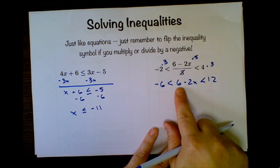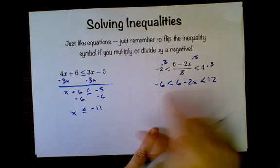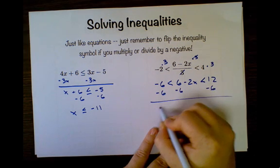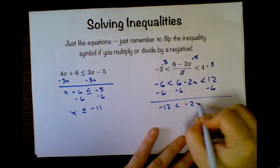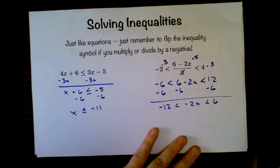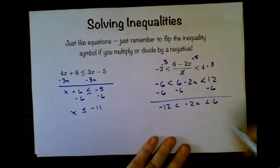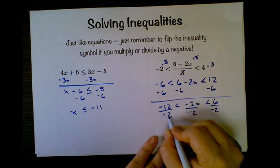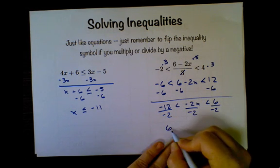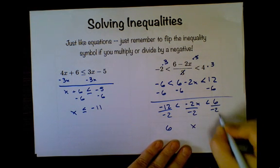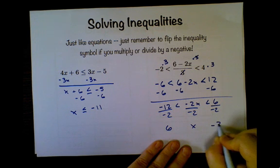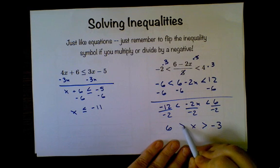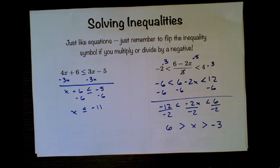Now I'm going to subtract a 6 from all three sides. So negative 12 is less than negative 2x is less than 6. And now I need to divide everything by negative 2. Negative 12 divided by negative 2 is positive 6, x, and 6 divided by negative 2 is negative 3.